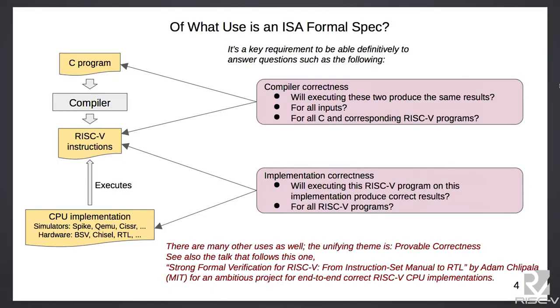This is more than testing — you're not just testing for some particular run of the program, you want to verify it for all inputs. You want to go even higher and say that your compiler is correct: namely, for any high-level source program, my compiler will produce the correct RISC-V instructions. A starting point for all of this is to have a formal spec for the ISA.